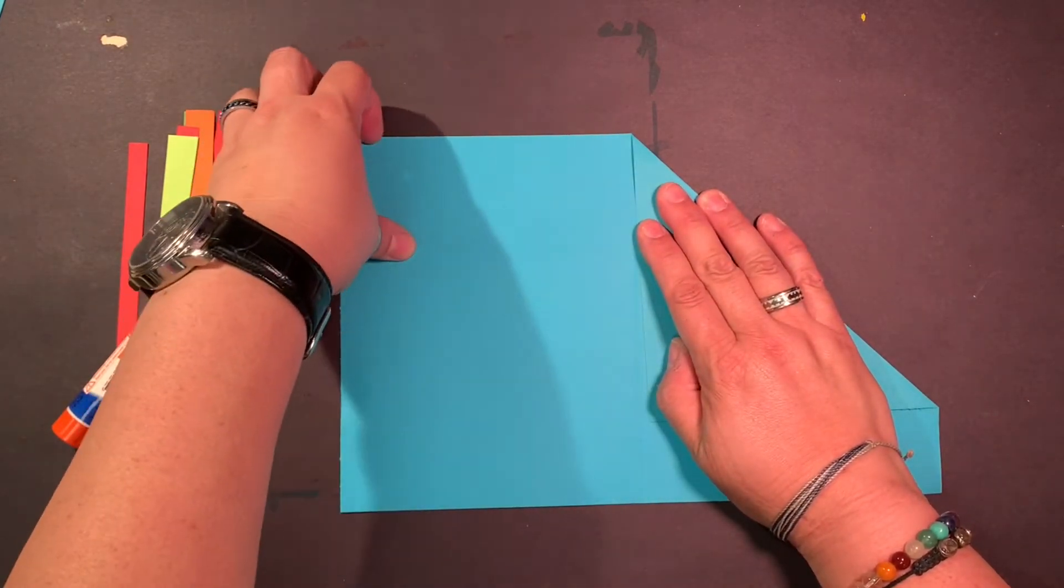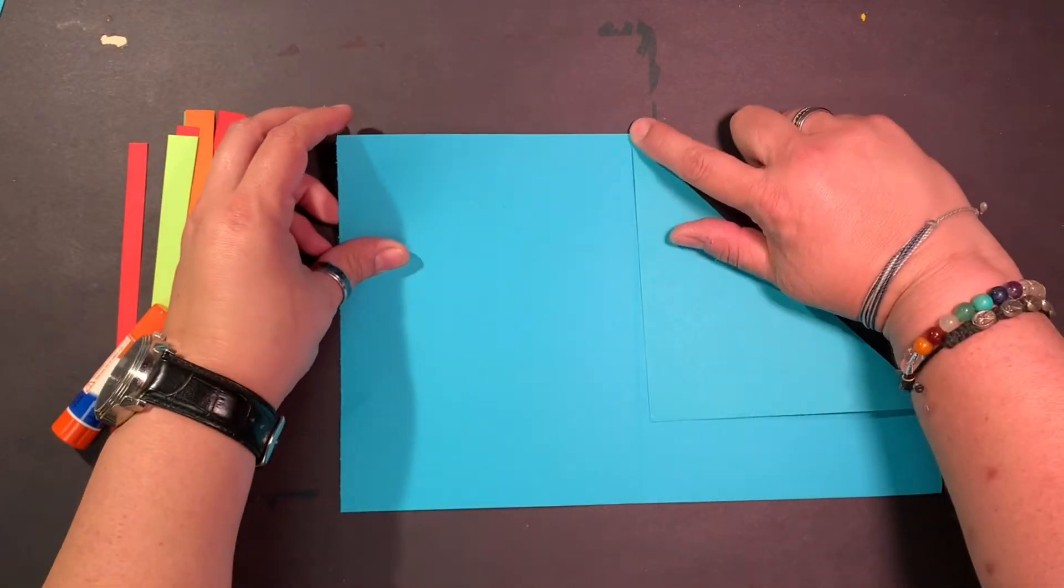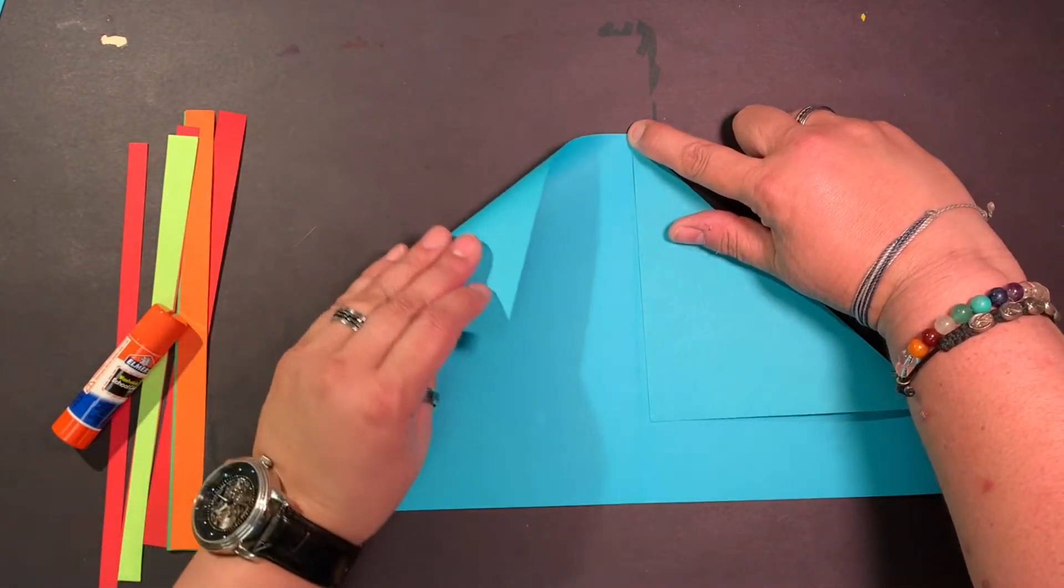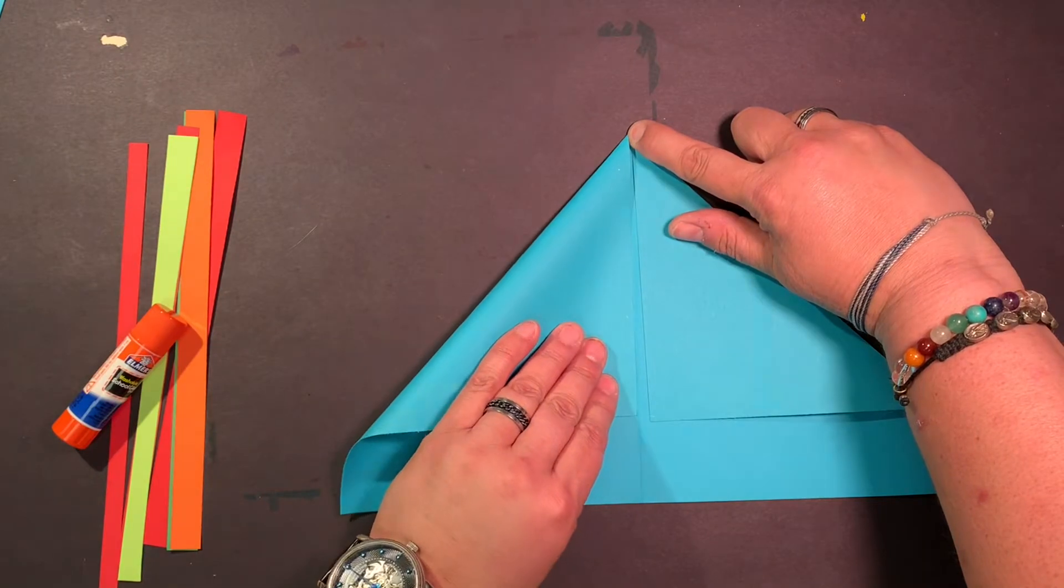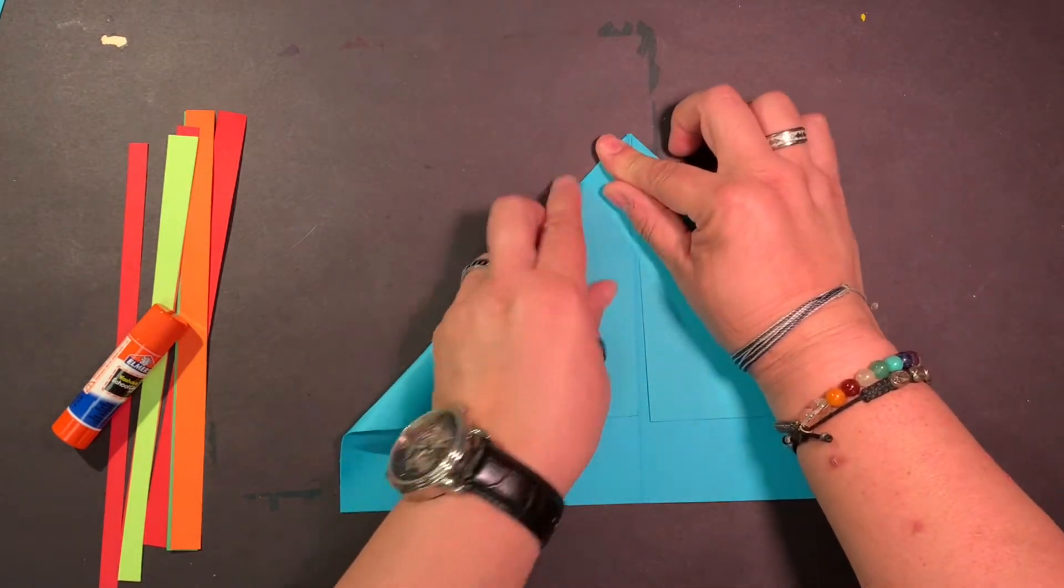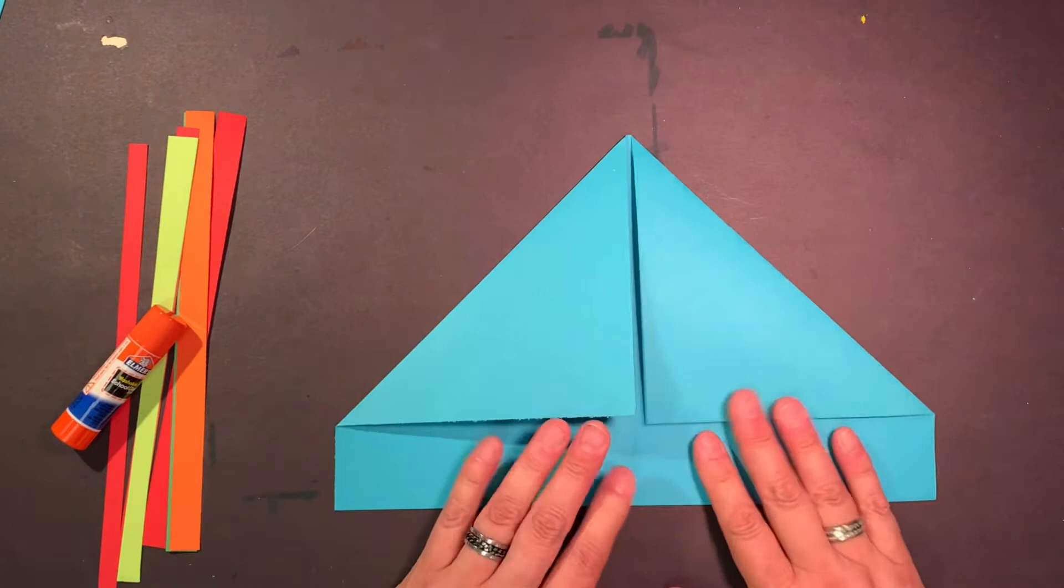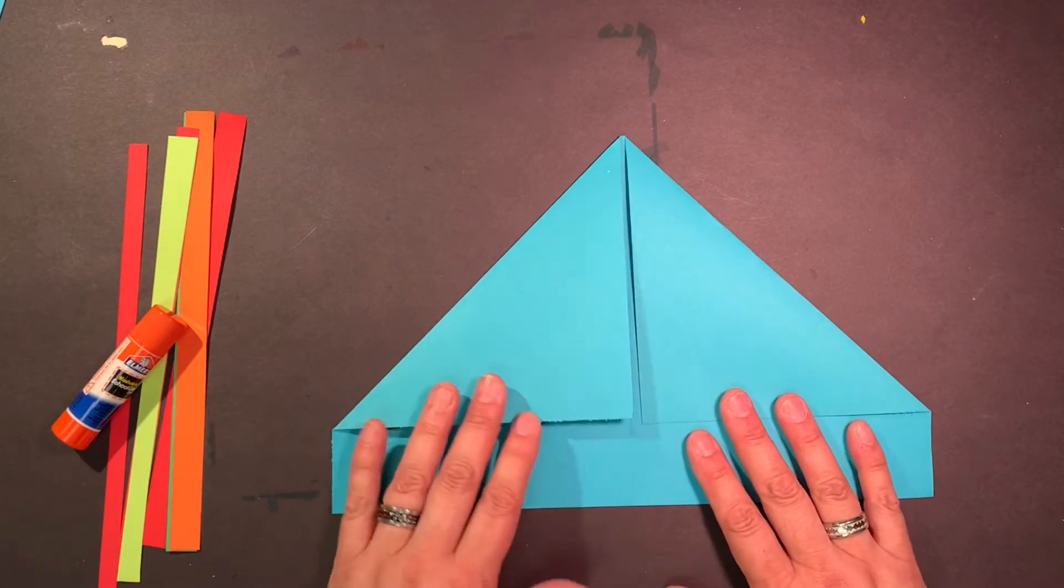If you said triangle you are correct. So you're going to do the same on this side. You can put your finger on the top of the triangle here, the top of the fold line and pull this down like that. And if you did it correctly, look at that. It makes what looks like two sails on a sailboat or an arrow.